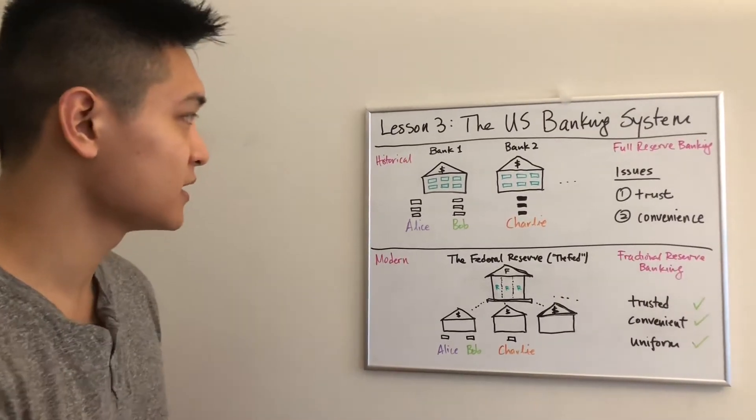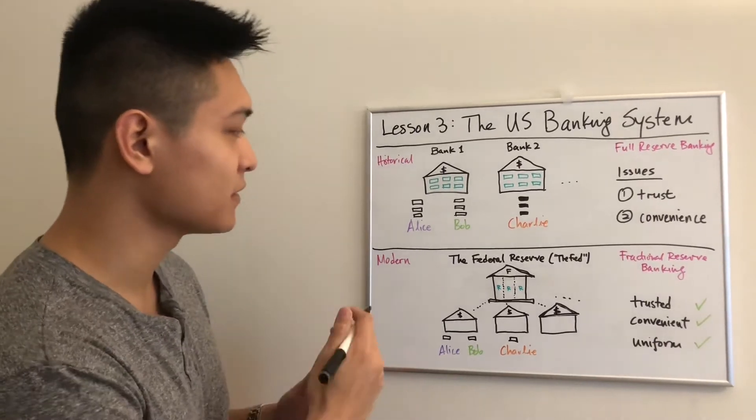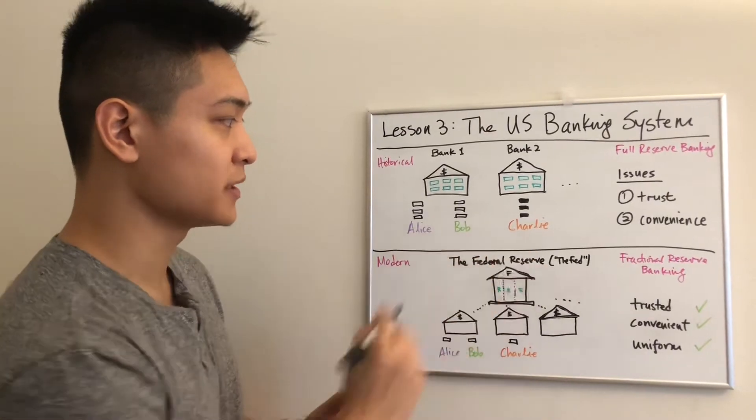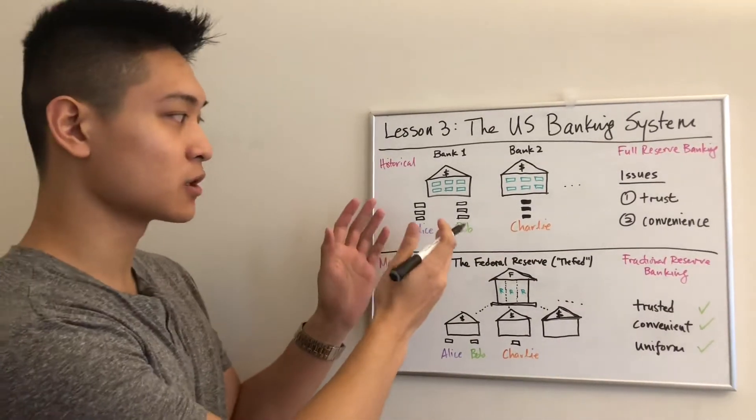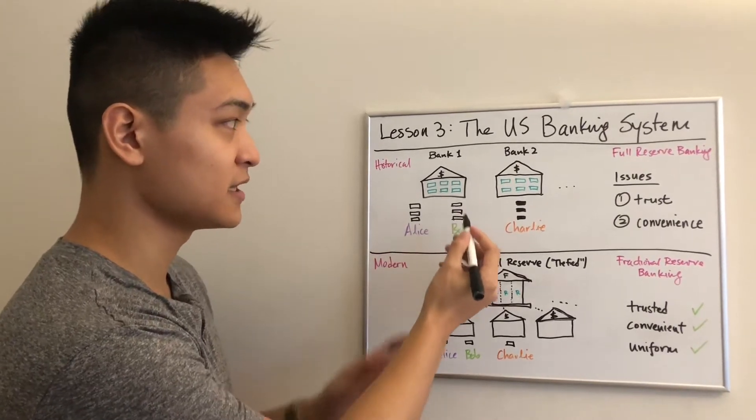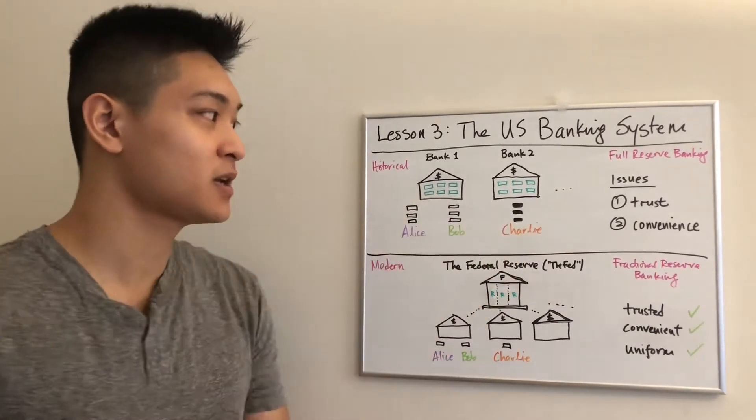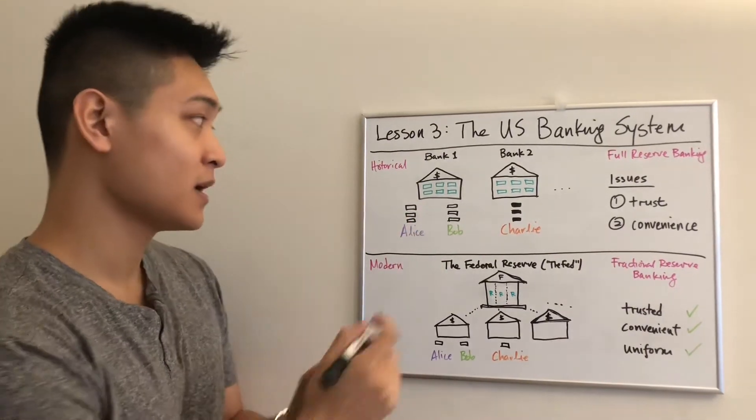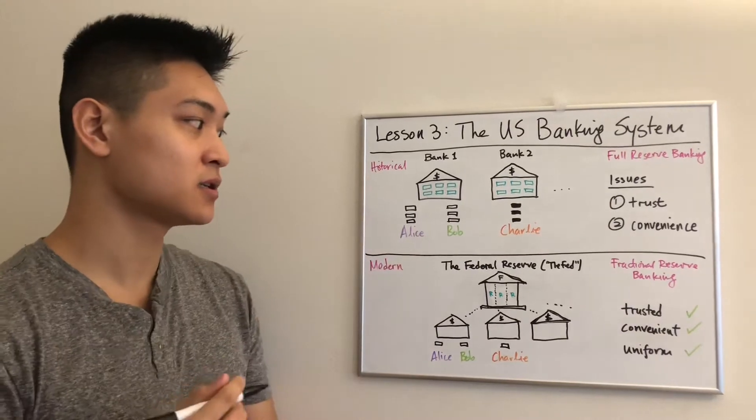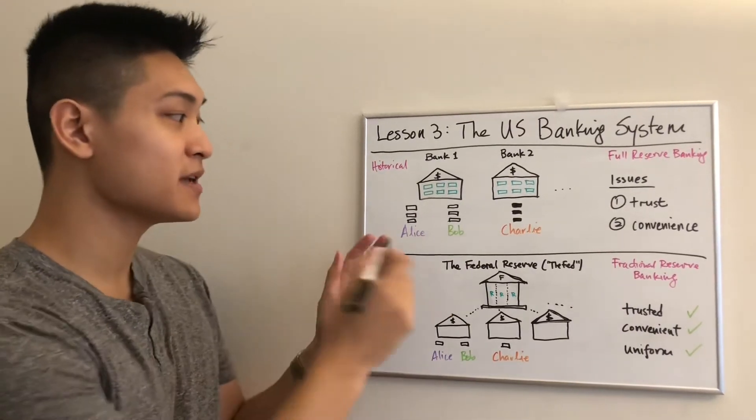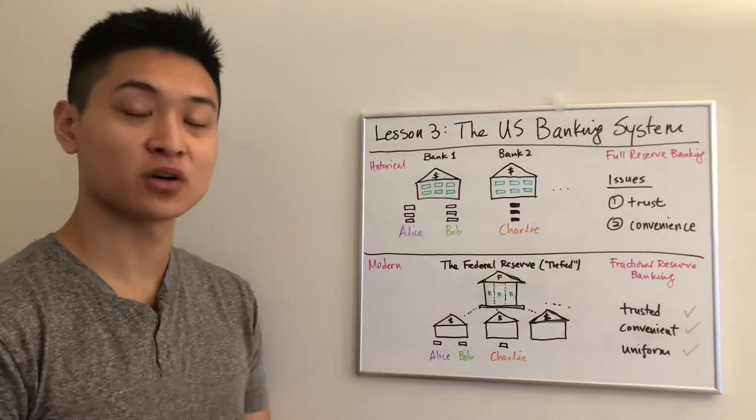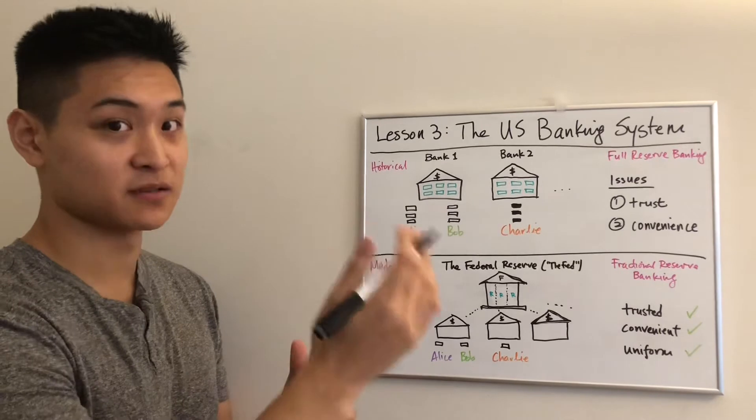Historically, as we talked about last time, we have our three friends Alice, Bob, and Charlie. They would each earn gold for their production and deposit that gold in an entity called a bank which would hold it for safekeeping. Then those banks would issue certificates to each individual, and the individuals could trade that certificate, which would be much more convenient instead of trading the physical gold.